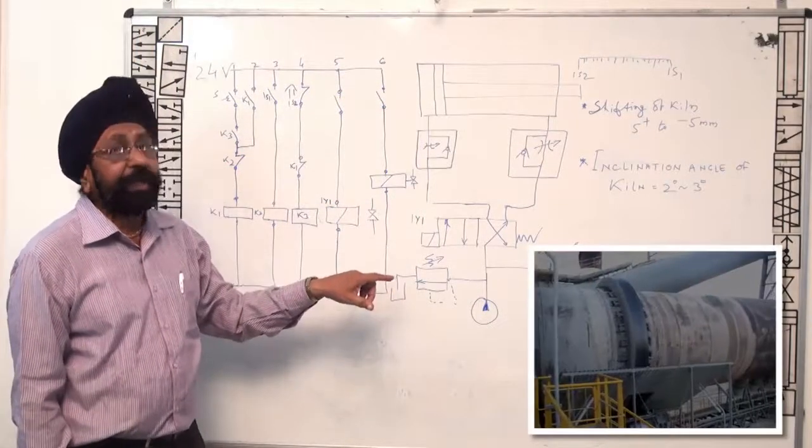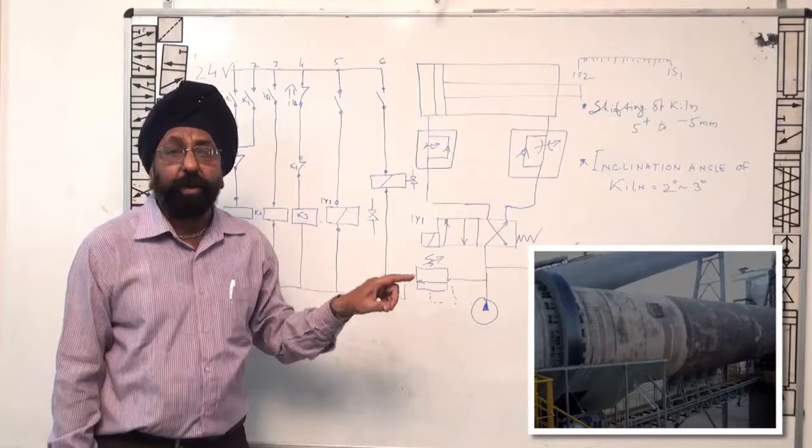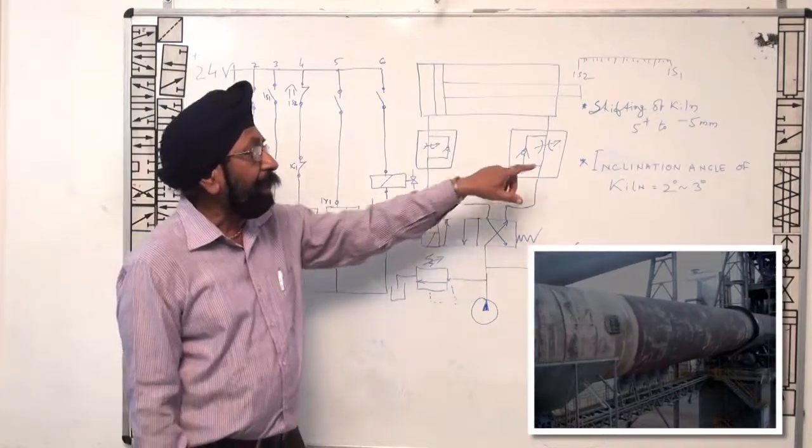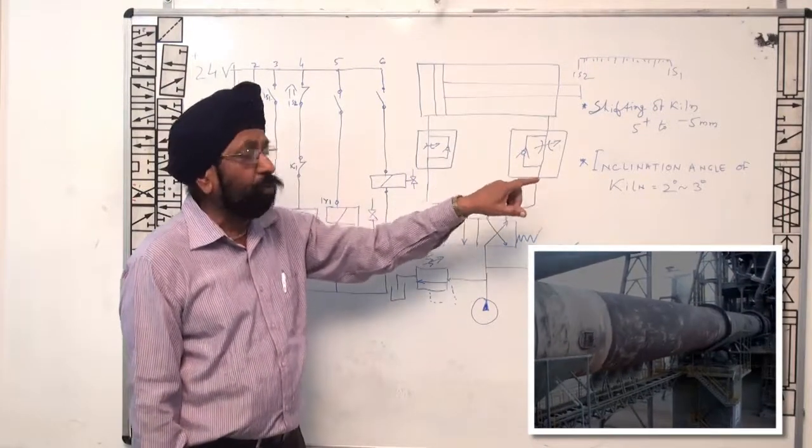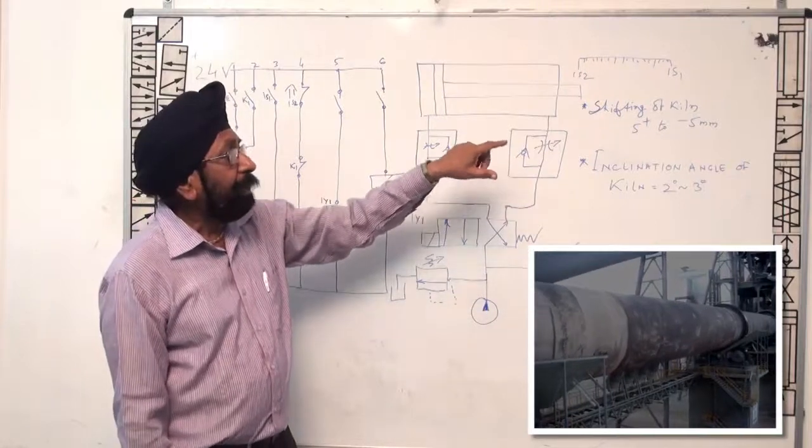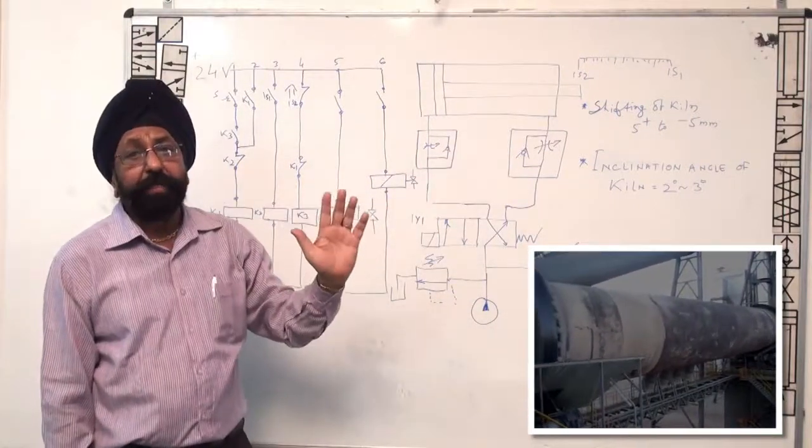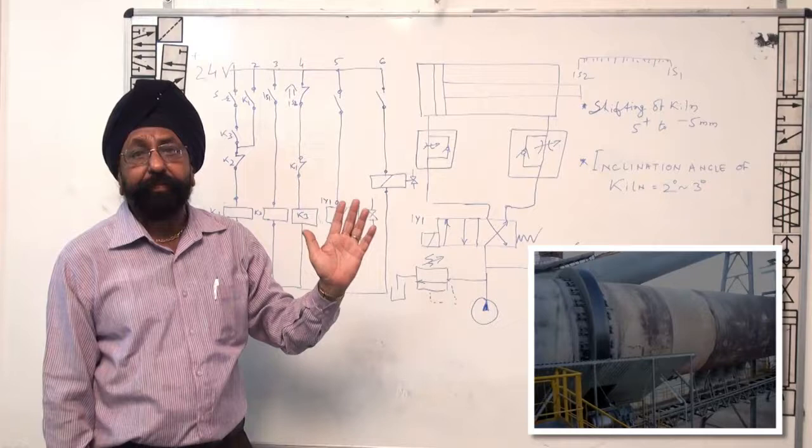Why is this hydraulic circuit required in kiln operation? Because the inclination of the kiln is 2 to 3 degrees, and its shifting is always plus 5 to minus 5 mm.